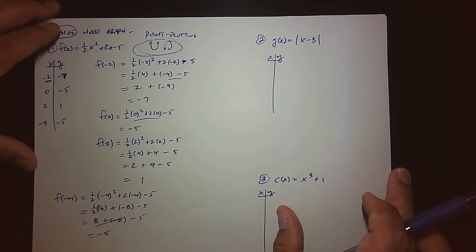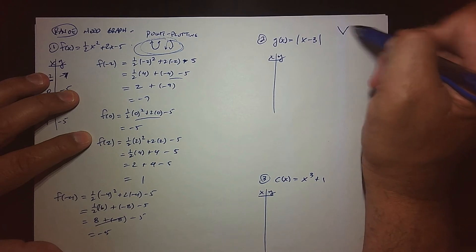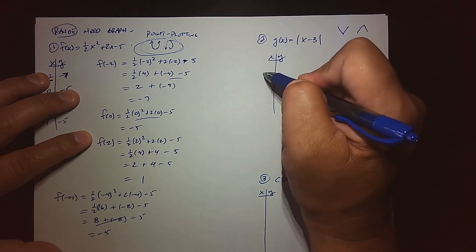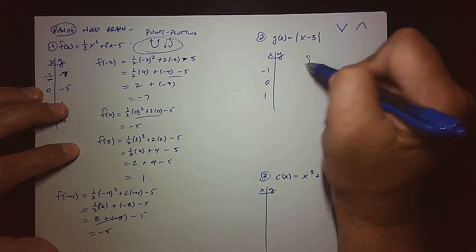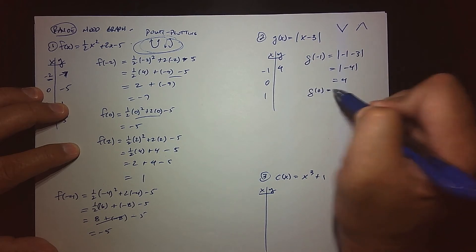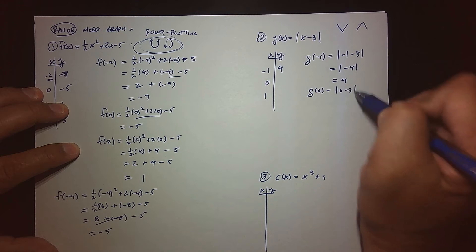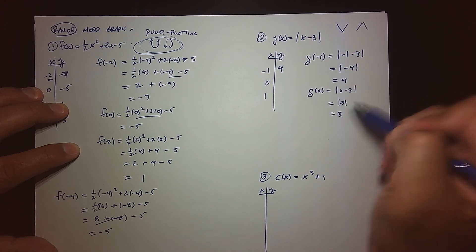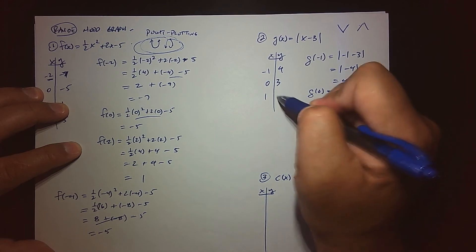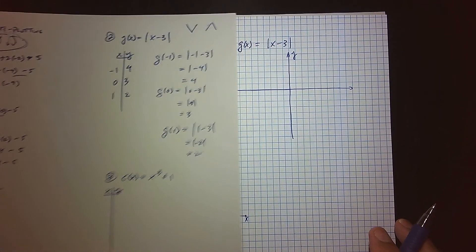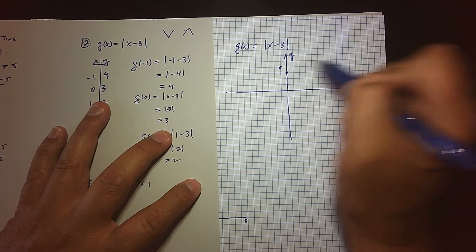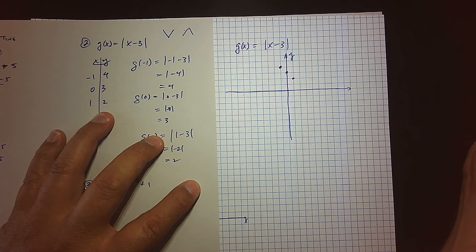Now for the absolute value function. The shape I'm expecting is a v-shape, so we'll keep plotting until we see it. Let's try zero, negative 1, 0, and 1. When I plug in negative 1, I get the absolute value of negative 4, which is 4. When I plug in 0, I get 0 minus 3 — that's 3. When I plug in 1, I get 2. Plotting those points on the grid: (negative 1, 4), (0, 3), (1, 2). We don't see the v-shape yet.